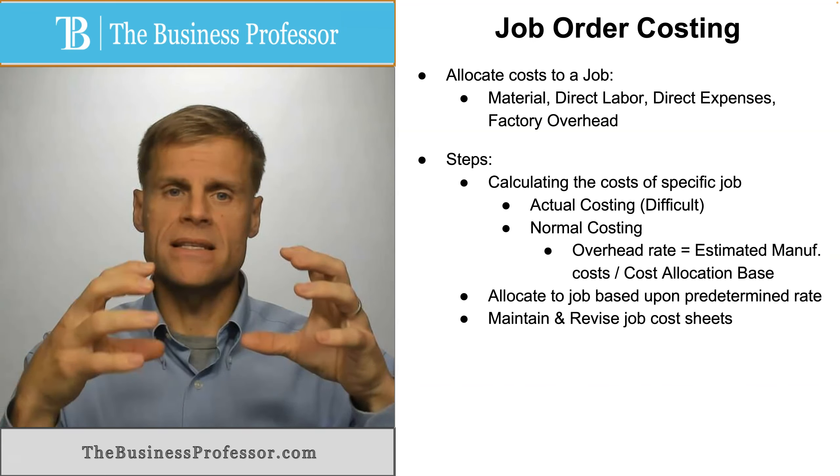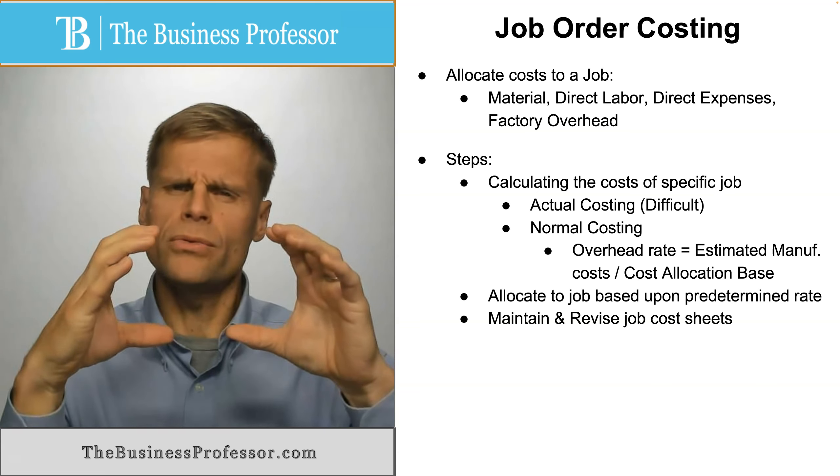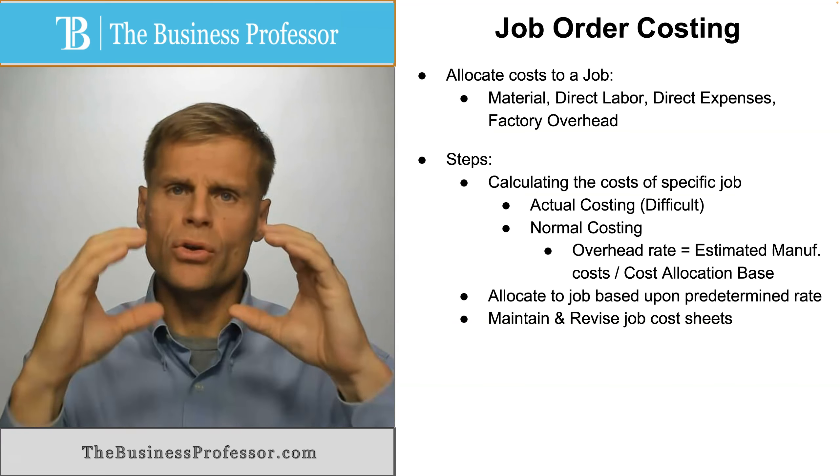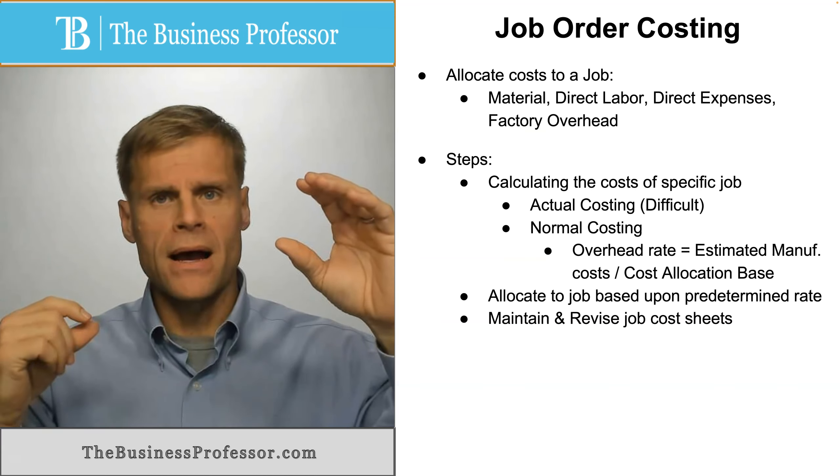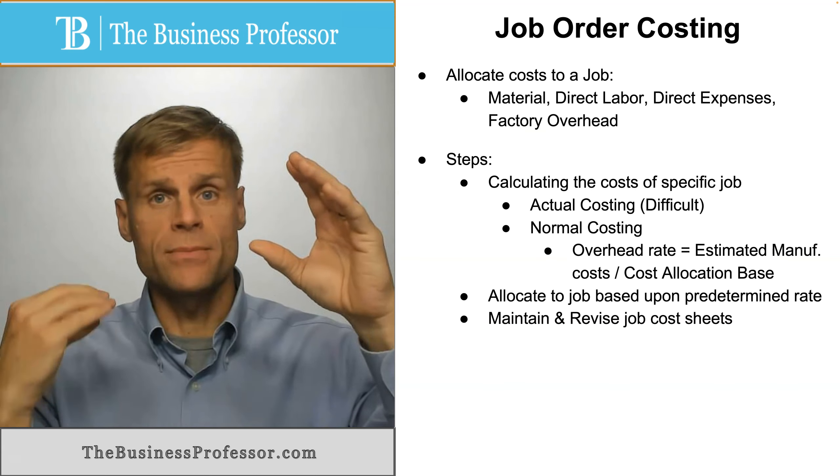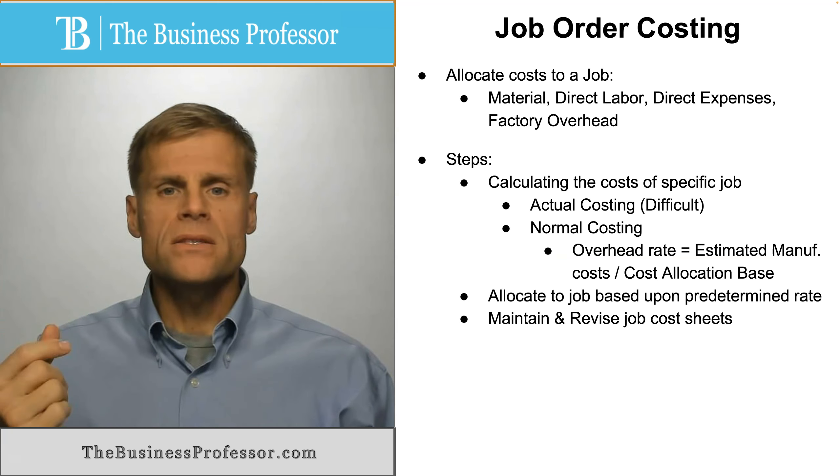All of those expenses that you thought were allocable to this type of activity, you divide them by an allocation base—how much of that existed throughout the company—and it will give you the rate.